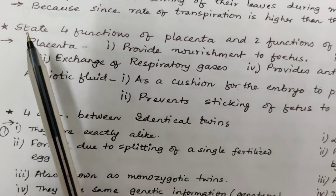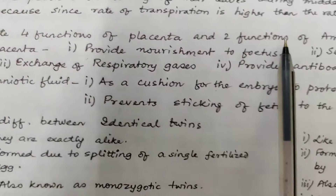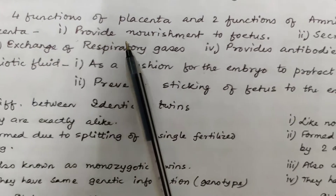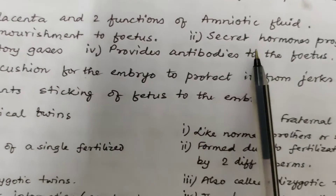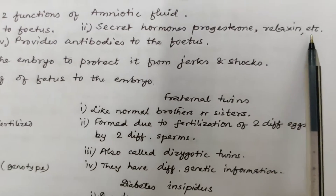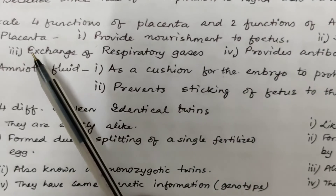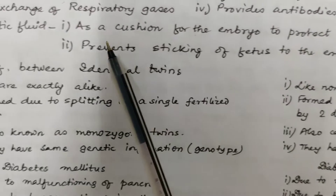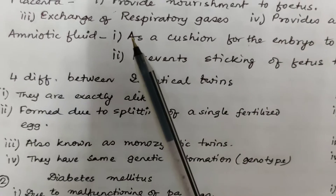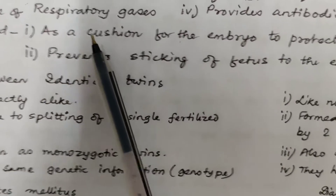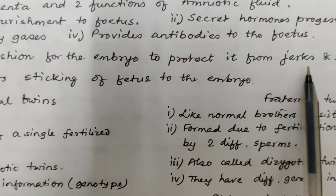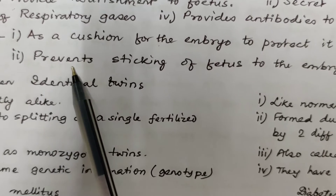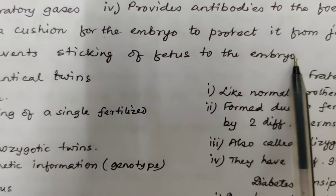State four functions of placenta and two functions of amniotic fluid. Four functions of placenta: to provide nourishment to the fetus, to secrete hormones such as progesterone and relaxin, to exchange respiratory gases, and to provide antibodies to the fetus. Two functions of amniotic fluid: it acts as a cushion to protect the embryo from jerks and shocks, and it prevents sticking of the fetus to the embryo.